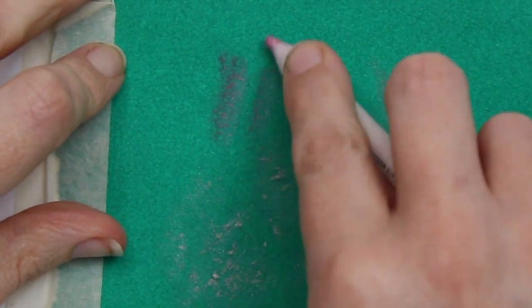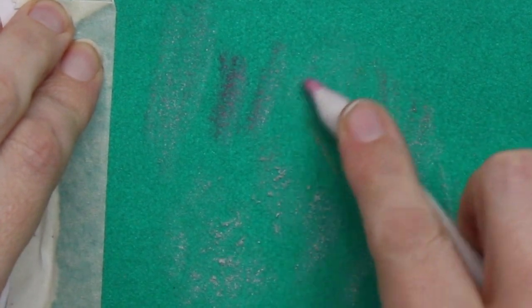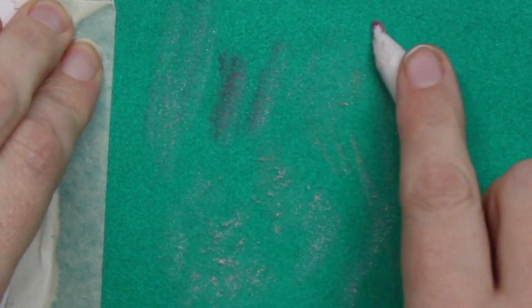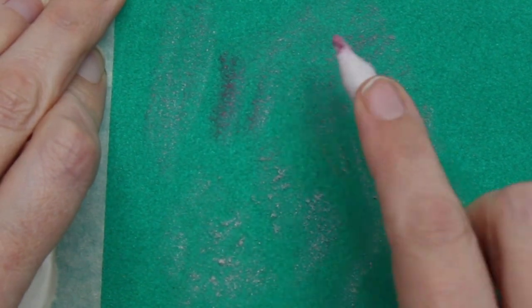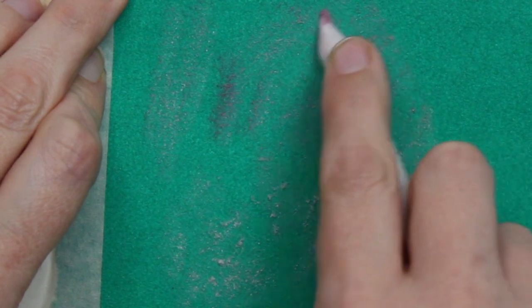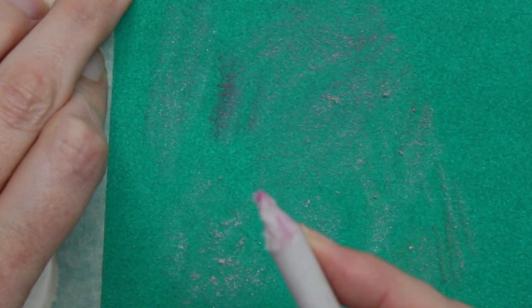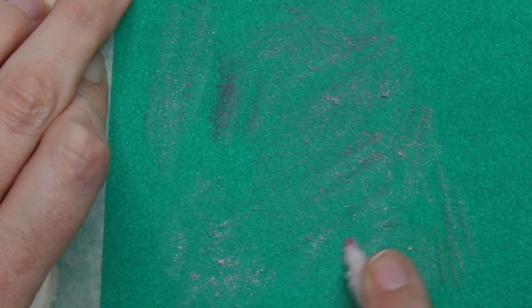Now this blending stump has considerably more residue on it. I think I may have actually used this for oil pastels—I can't honestly remember—but it does have quite a lot of color residue on it. Most blending stumps you will see will have charcoal and pencil on them, but I do use them quite a lot for color pencil work and Prismacolor, which is wax-based, and oil pastels.